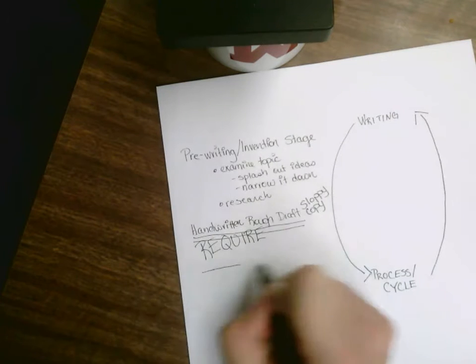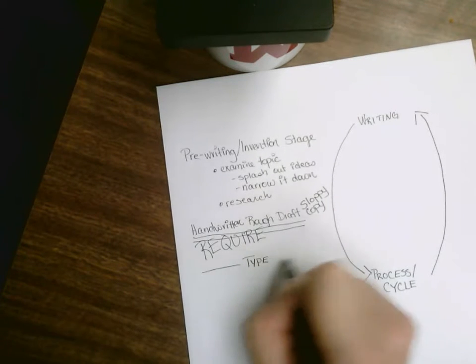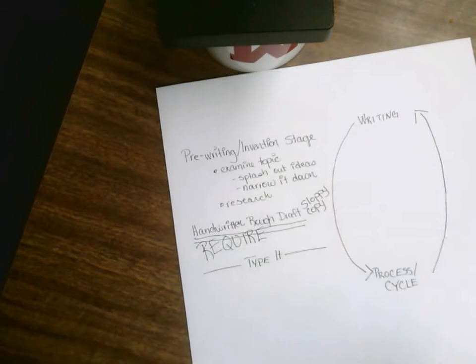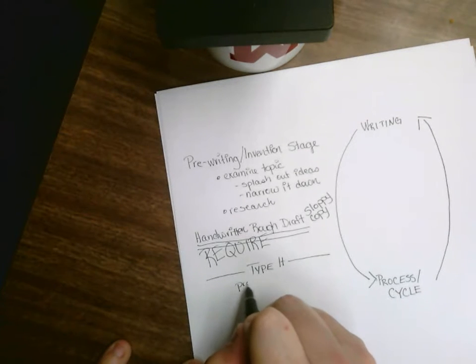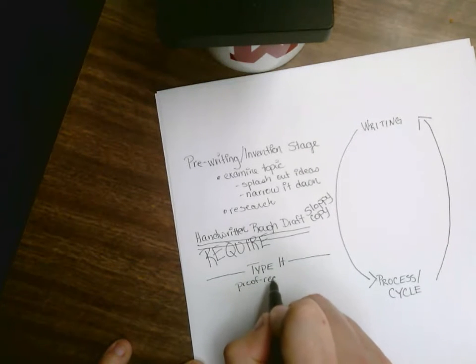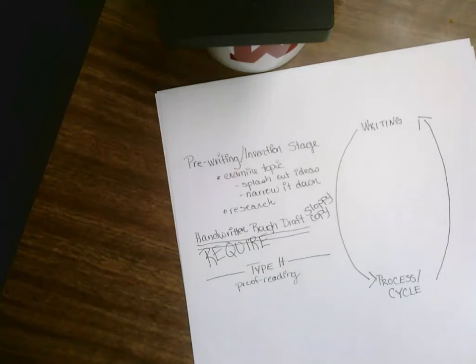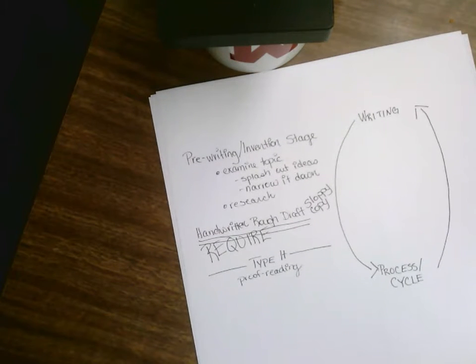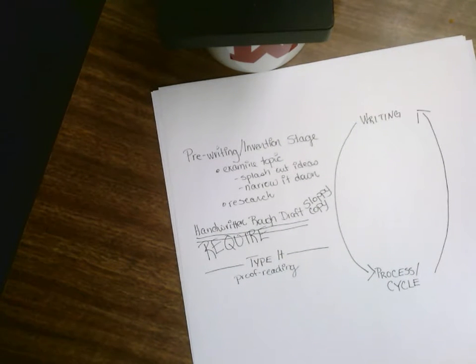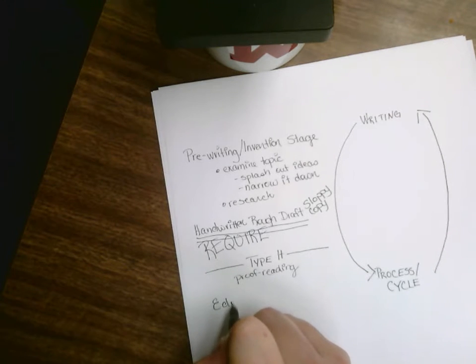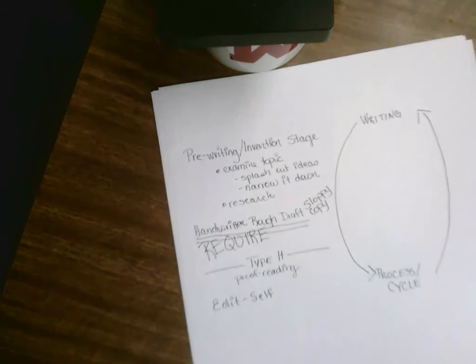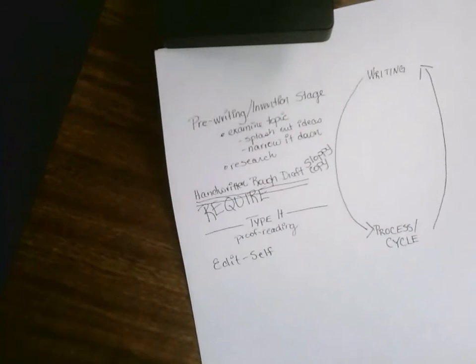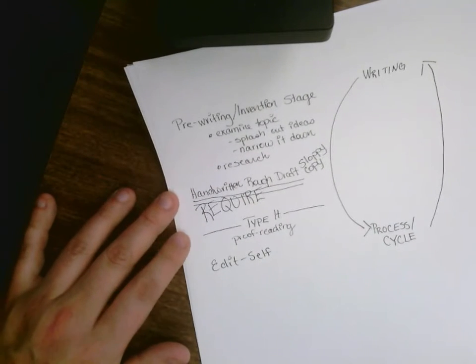After we do the handwritten rough draft, this is where we go and we type it. When we're doing typing, often times we engage in some level of proofreading. We're having to read our writing over, and we're going to do a little level of proofreading and hopefully able to start catching the mistakes. Next, we need to read what we have done and we start with our self.